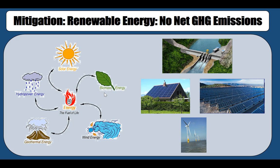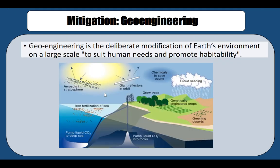Net zero means that if carbon dioxide is created during the process of deriving energy, the process itself reabsorbs it so that the overall effect is net zero. Other mitigation approaches are also available, including the very interesting strategy of geoengineering.